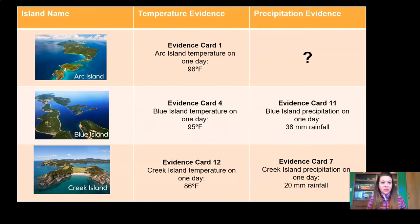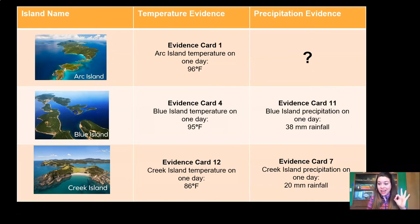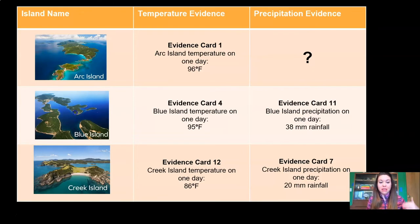Let's look back at our data table. We can compare Blue Island and Creek Island. When we compared their temperatures, we found that Blue Island had a really hot temperature of 95 degrees compared to Creek Island's temperature of 86 degrees, so Blue Island was the hottest of those two islands. Looking at precipitation, Blue Island had 38 millimeters of rainfall and Creek Island only had 20 millimeters of rainfall. So Blue Island was both the hottest and the rainiest of the islands we had data for.